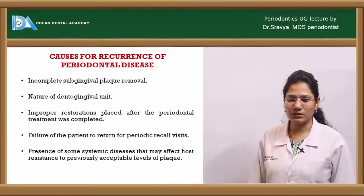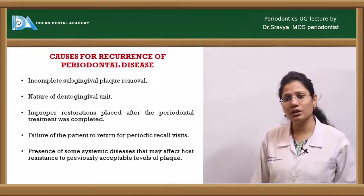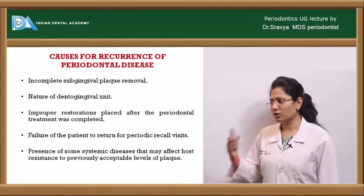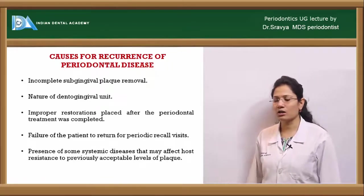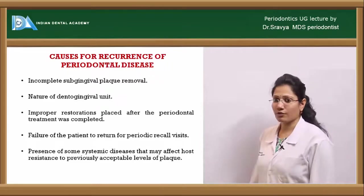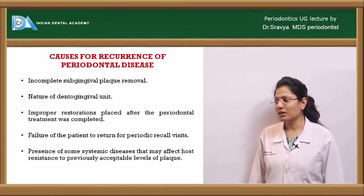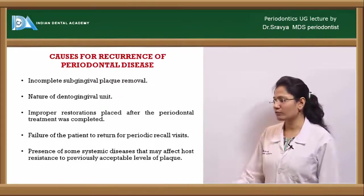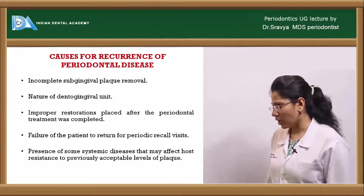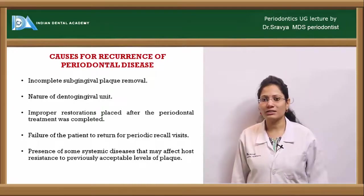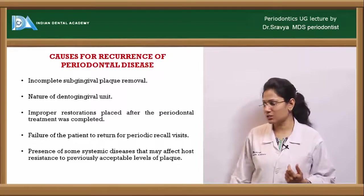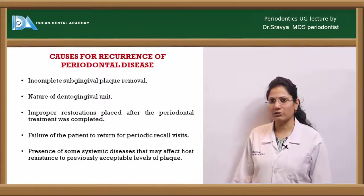What are the causes for recurrence of periodontal disease, and why do we need to periodically recall and maintain the patient? The causes include incomplete subgingival plaque removal, the nature of the dentogingival unit, improper restorations placed after periodontal treatment, failure of the patient to return for periodic recall visits, and the presence of systemic factors or diseases that affect host resistance to previously acceptable levels of plaque.